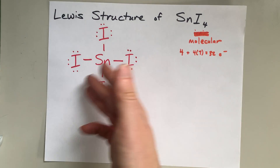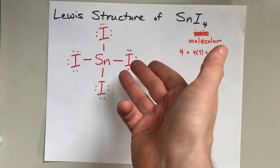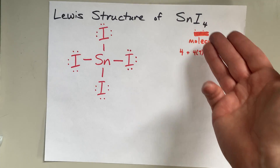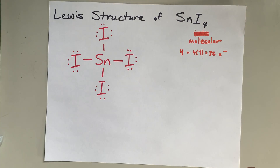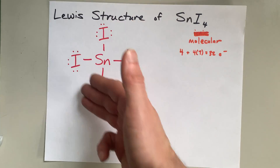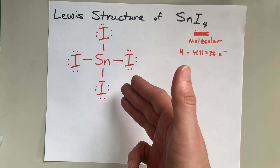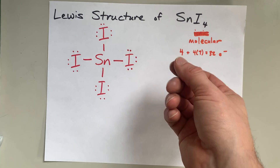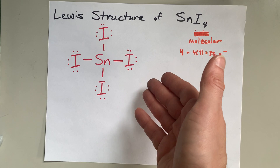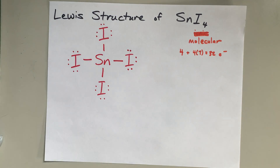This is the complete Lewis structure for tin-4-iodide, and it is a molecular structure — tetrahedral, if you know anything about VSEPR shapes. And this is it. Thanks for being with me, and best of luck.